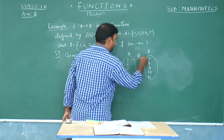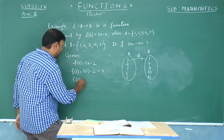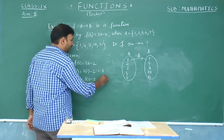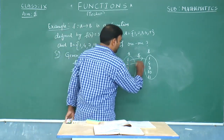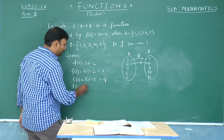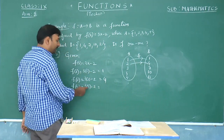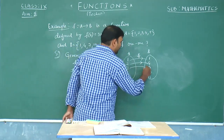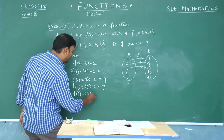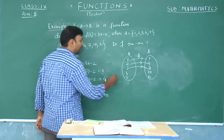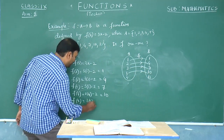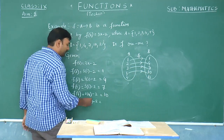The image of 2 is 4. Next, f(3) = 3(3) − 2 = 9 − 2 = 7, so the image of 3 is 7. The image of 4 is f(4) = 3(4) − 2 = 12 − 2 = 10. Finally, the image of 5 is f(5) = 3(5) − 2 = 15 − 2 = 13.